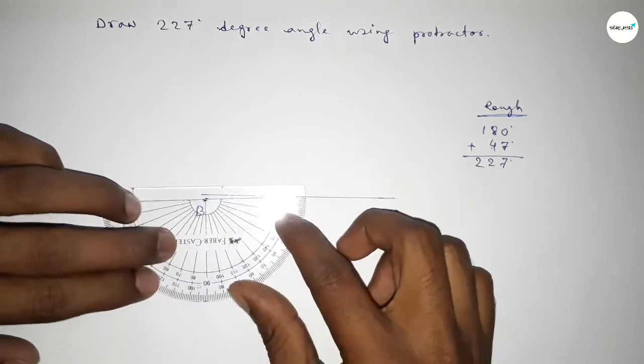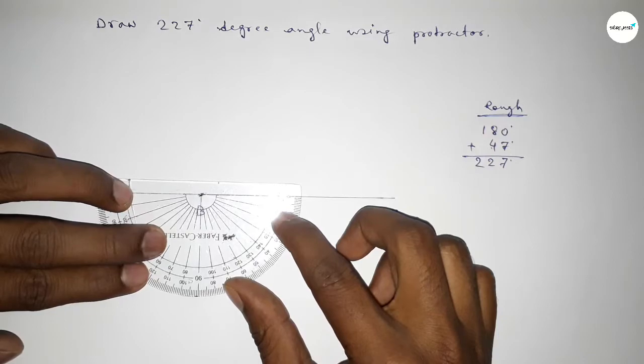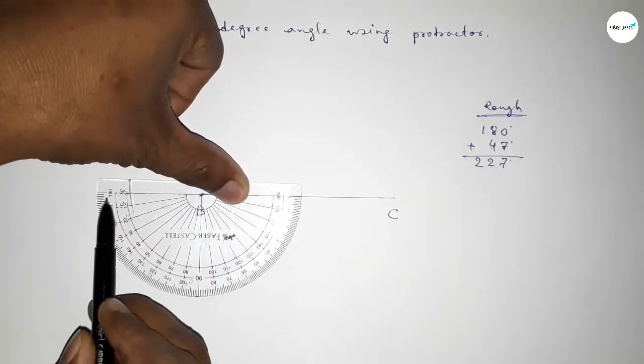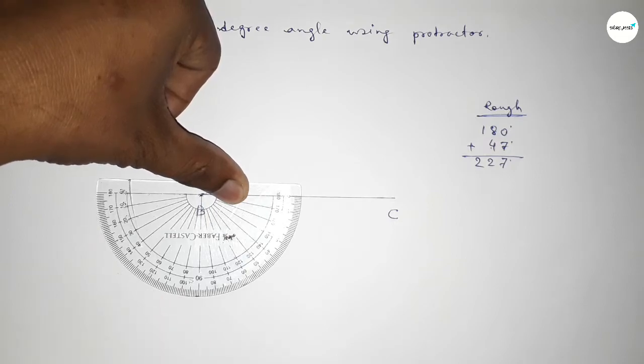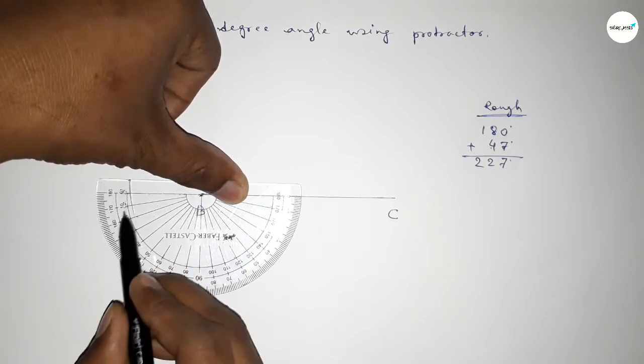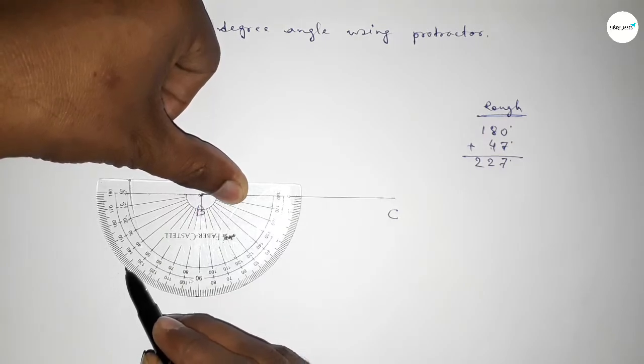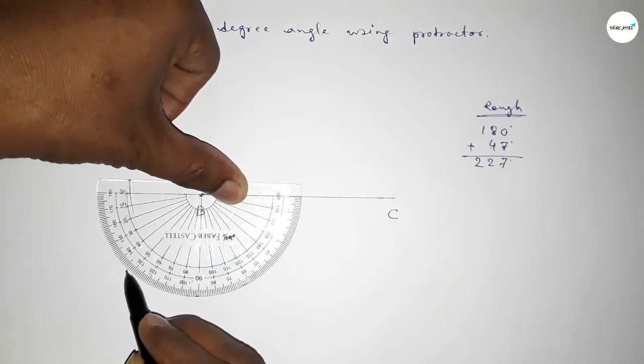Plus putting the protractor on the point B by this way and counting 47 degree angle. So this starting 180, also this is 0, 10, 20, 30, 40, 45, 46, 47. So this is 47 degree.